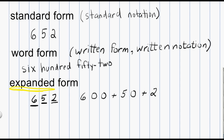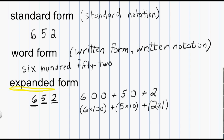There are a couple of variations on the expanded form that you might also run into. Sometimes your teacher might expect you to write a number in expanded form this way: take the 600 and write it inside parentheses as 6 times 100, and then add that to 5 times 10 — representing 50 — plus 2. Or they might even have you write 2 as 2 times 1, also inside parentheses.